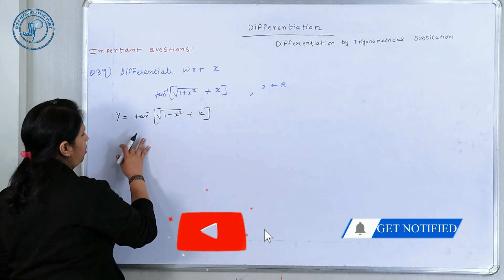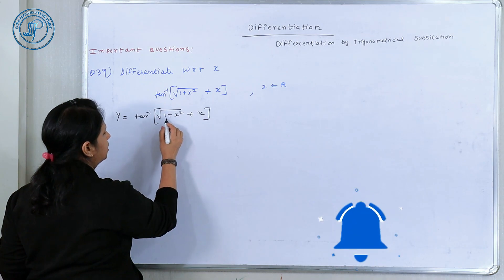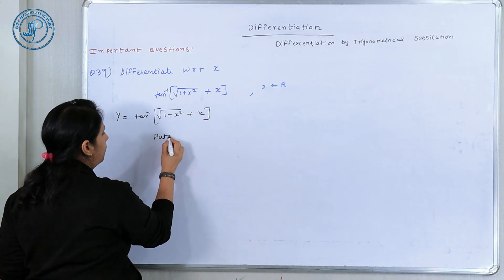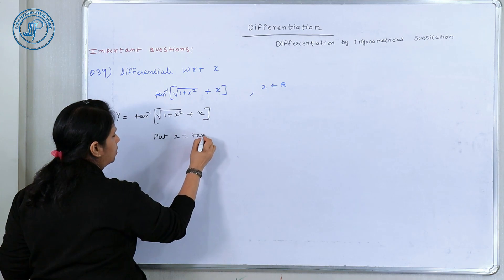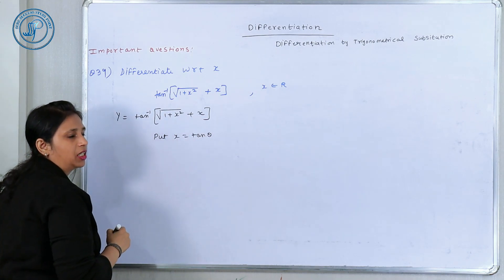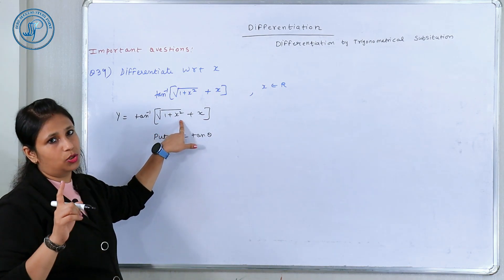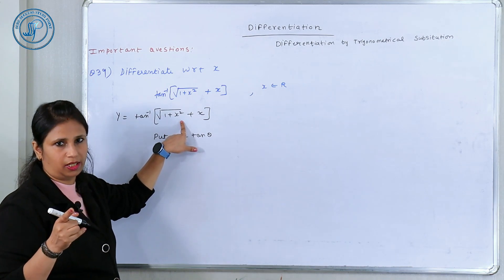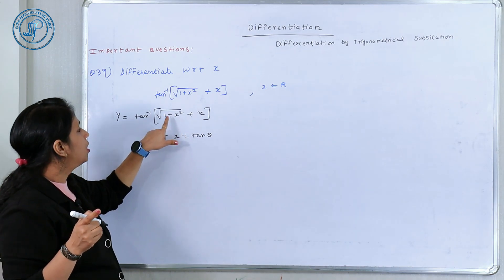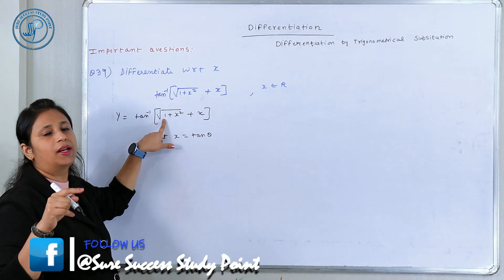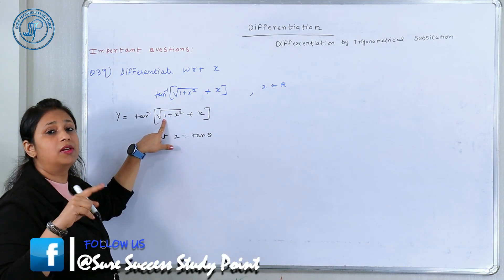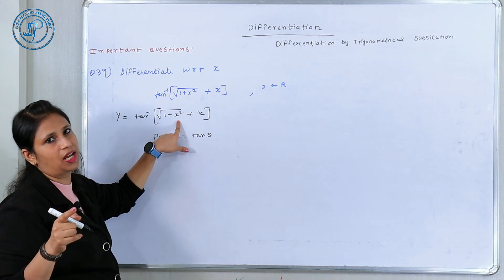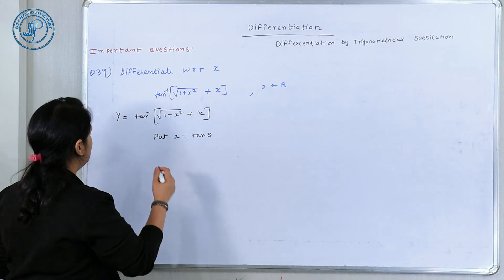So we work accordingly. Here, since we have 1 + x², we can put x = tan θ or cot θ, because 1 + tan²θ = sec²θ and 1 + cot²θ = cosec²θ. If we have 1 − sin θ, we can put x = sin θ or cos θ in various cases.